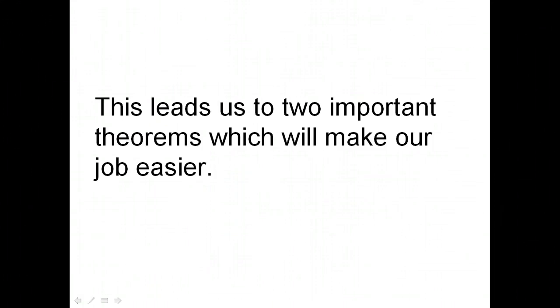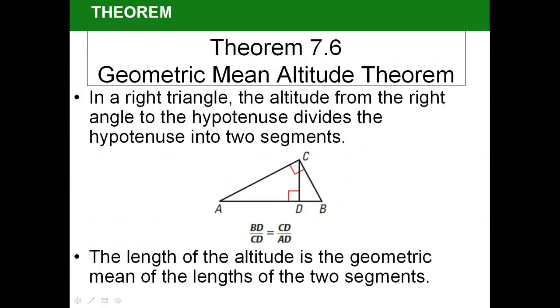This leads us to two important theorems which will make our job a lot easier. Now I know that was hard to follow, but just stay with me and I believe you'll see where it's going. The geometric mean altitude theorem says that if I'm looking for the altitude here, CD, then CD is going to be the square root of BD and AD. So in other words, the altitude is the geometric mean between the two parts of the hypotenuse.